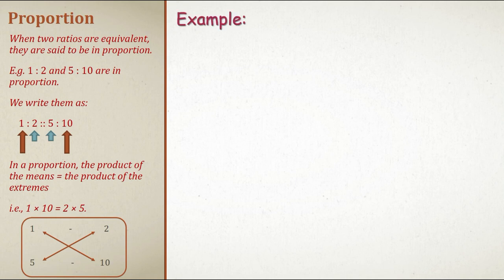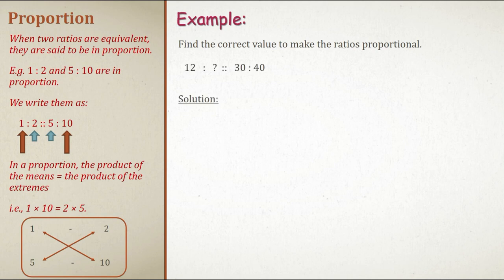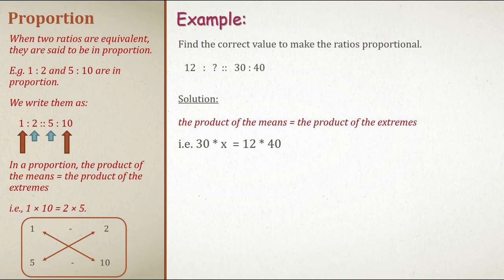Find the correct value to make the ratios proportional: 12 is to how much will be equivalent to 30 is to 40. Using product of means equals product of extremes: 40 into 12 equals 30 into x. So x equals 12 into 40 divided by 30, which gives 16.